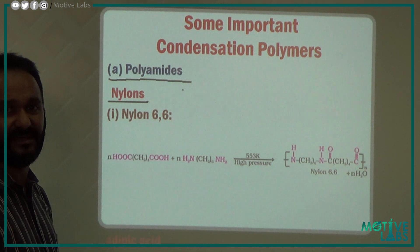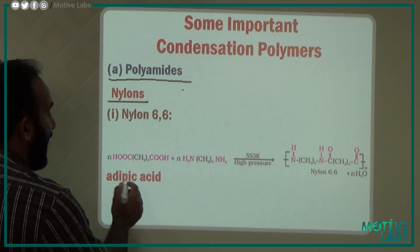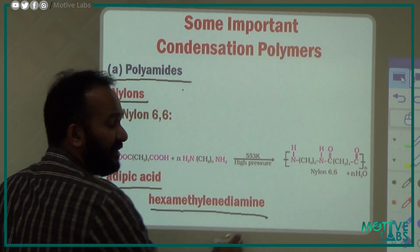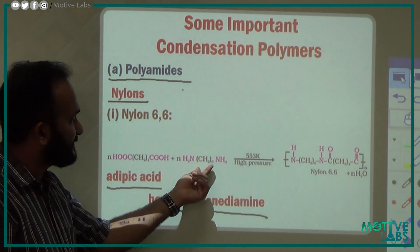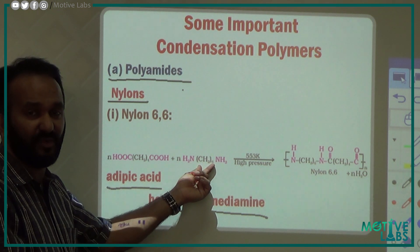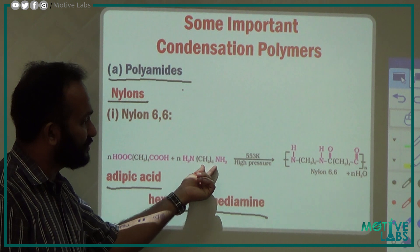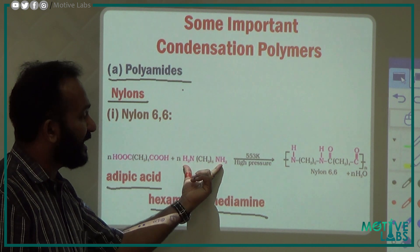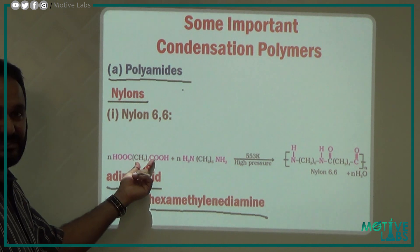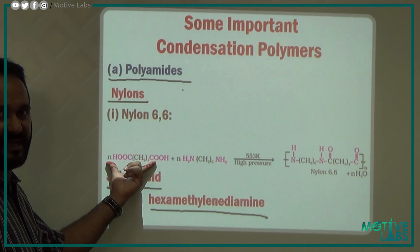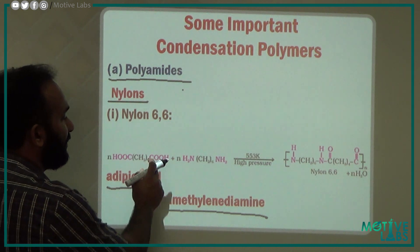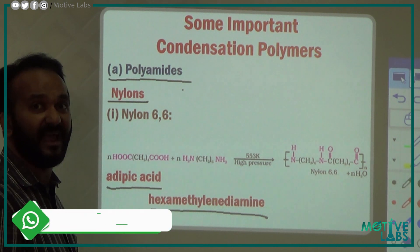What is Nylon 66? Adipic acid and hexamethylene diamine. The amino group is in hexamethyl CH2. Hexamethyl group appears 6 times — that's where the name comes from. Diamine has NH2 groups, hexamethyl diamine. Adipic acid has CH2 four times and a carboxyl group. Adipic acid reacts with the amino group.